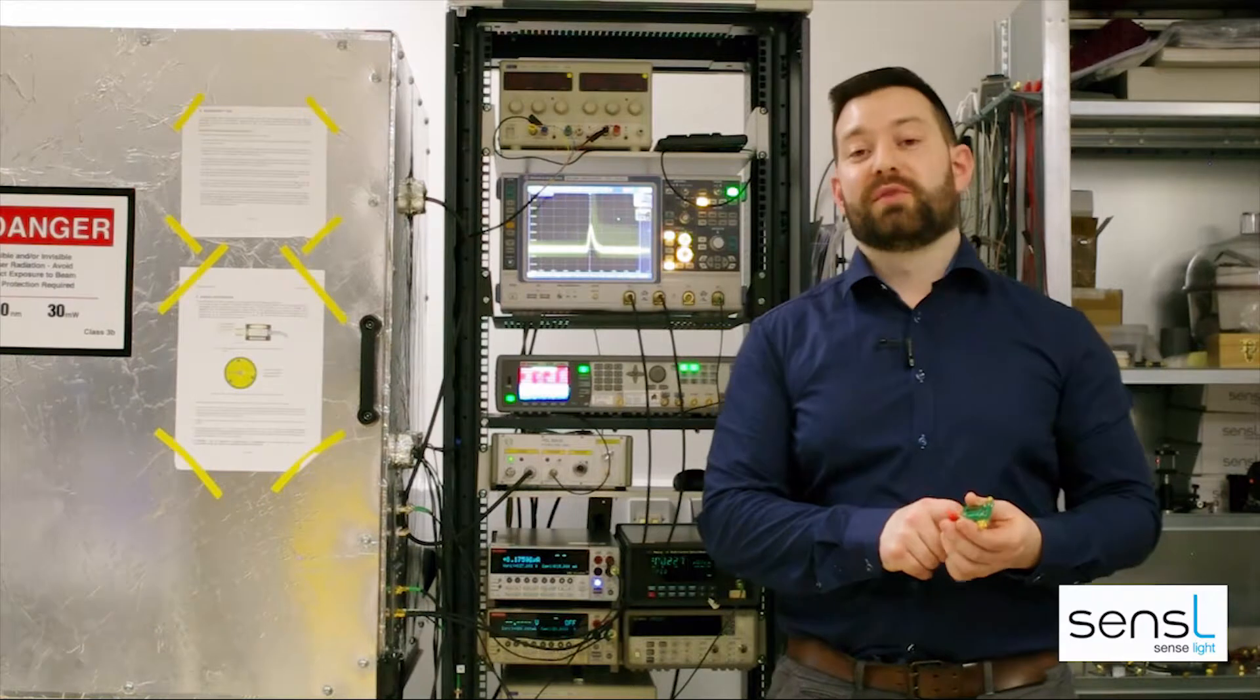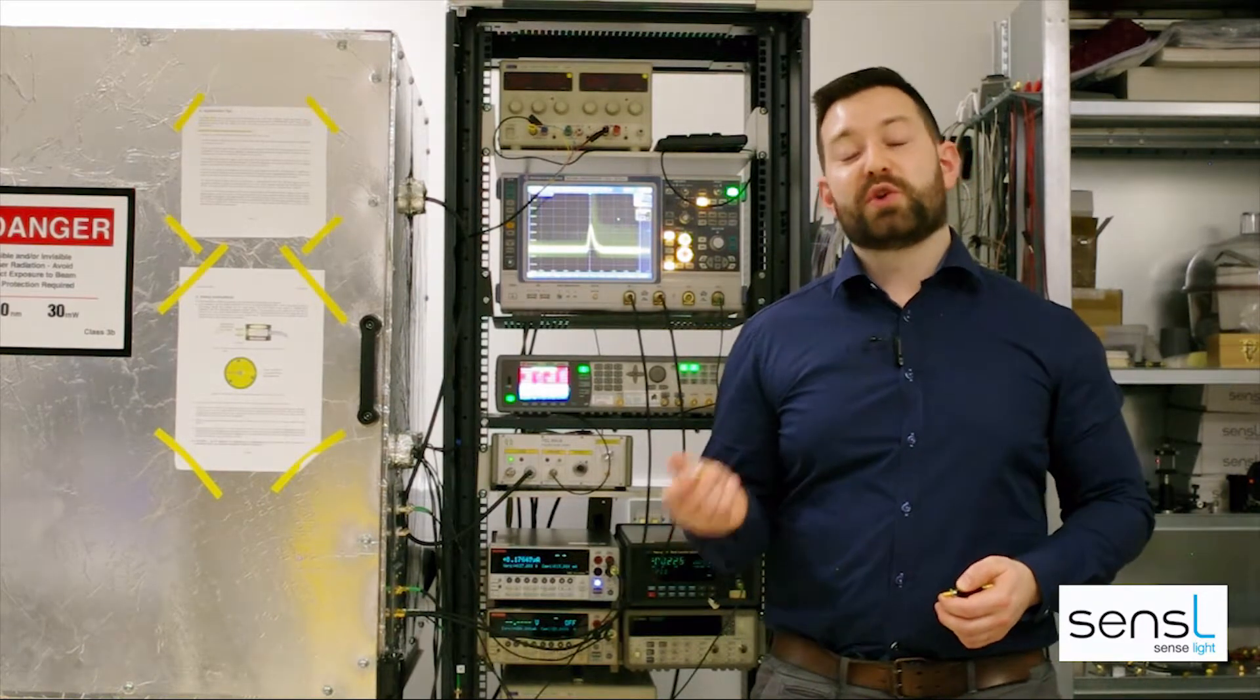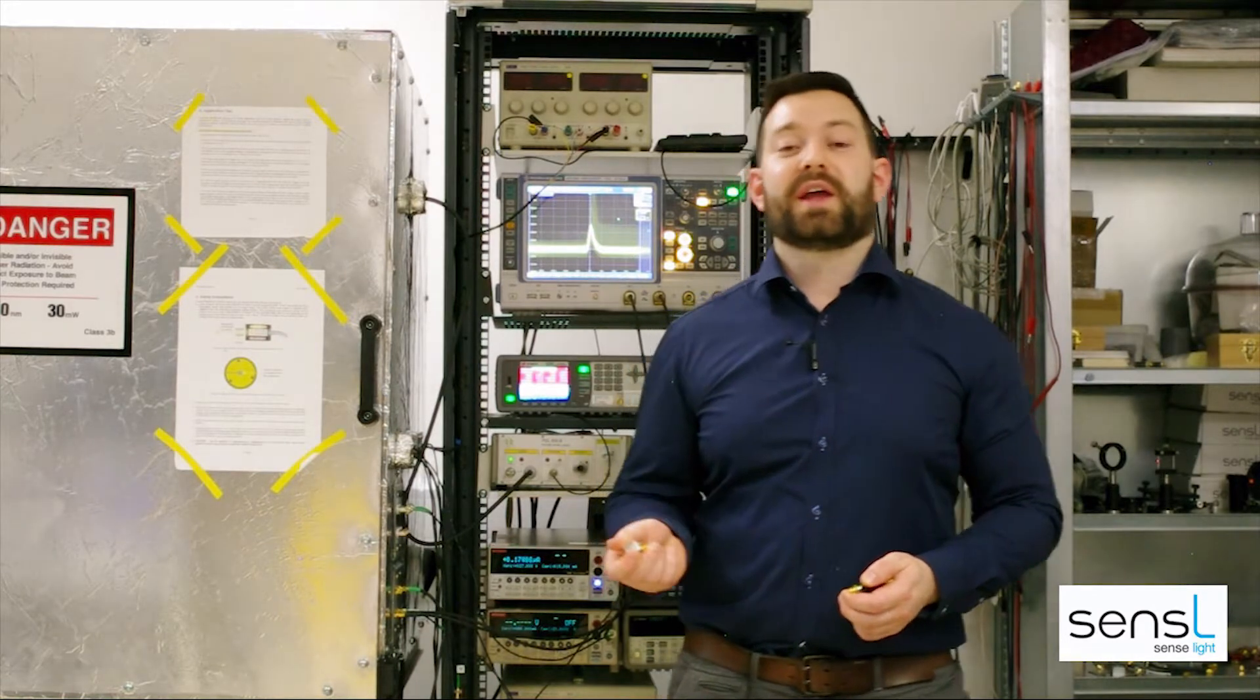So today we're going to use an amplifier to observe the dark counts. We're going to use a mini circuits amplifier and we're actually going to use two of these in series to provide a gain of around 100.